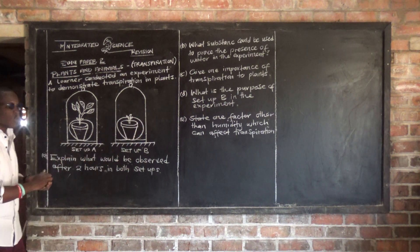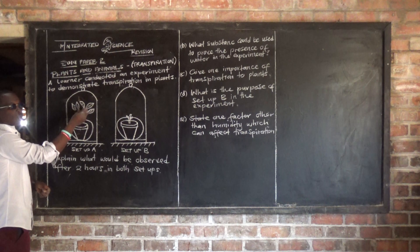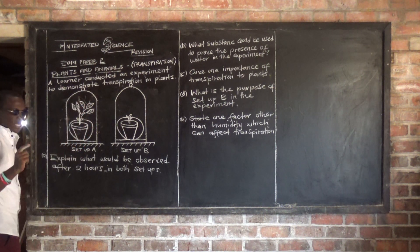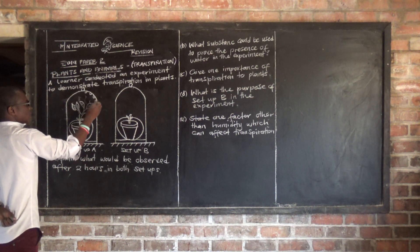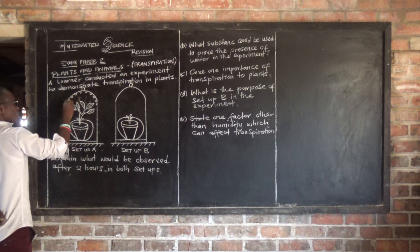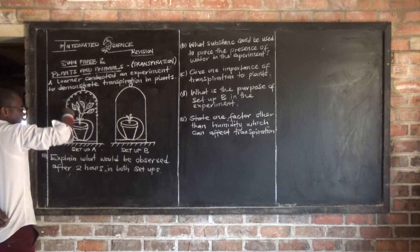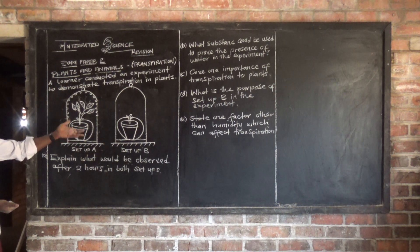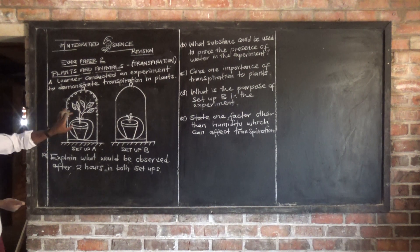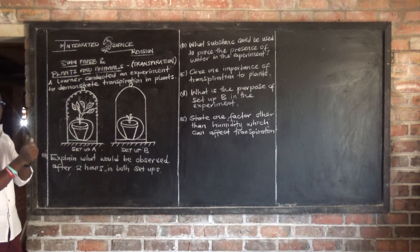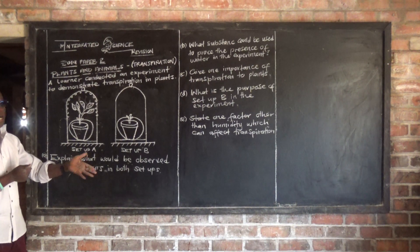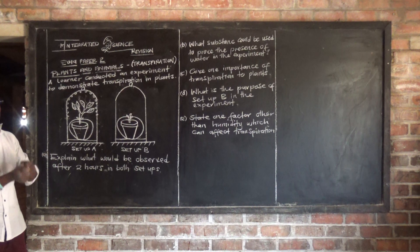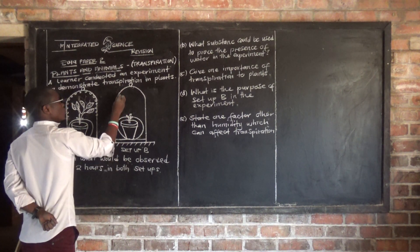When transpiration occurs in Setup A, the leaves are going to lose water vapour. The water vapour is going to move upwards, forming water droplets. So there will be a lot of water droplets in Setup A. In Setup B, there will be few or no water droplets because this plant does not have leaves - transpiration may occur in other parts, but at a very slow rate.